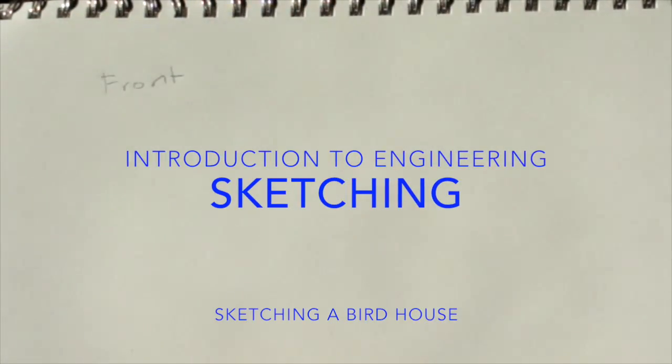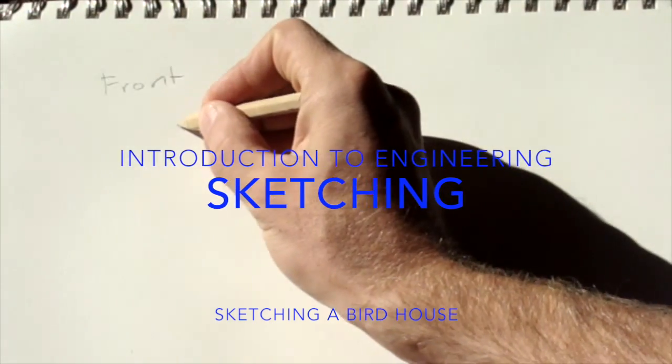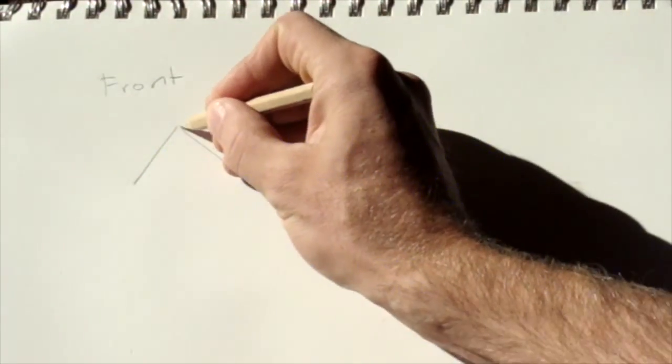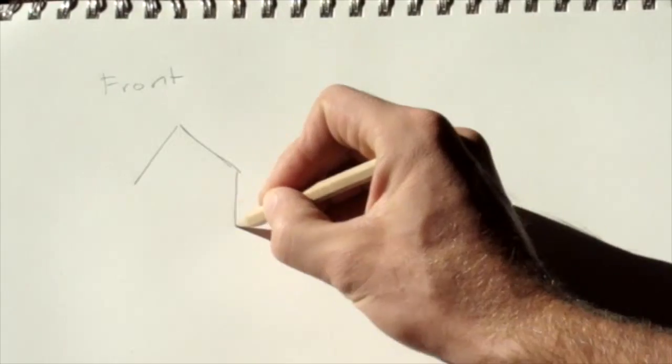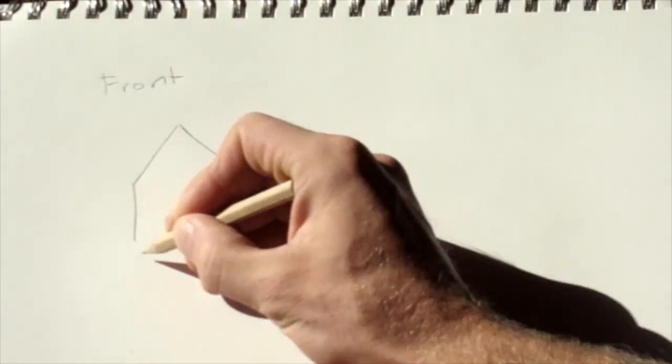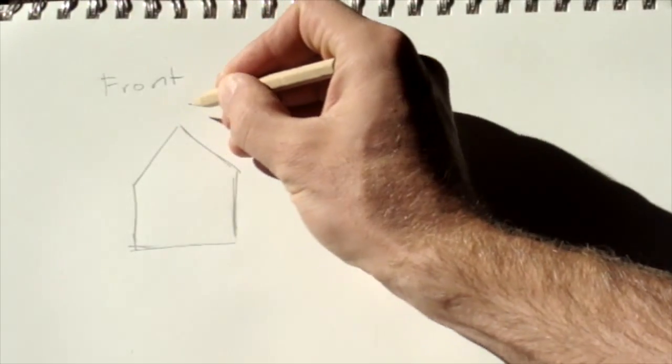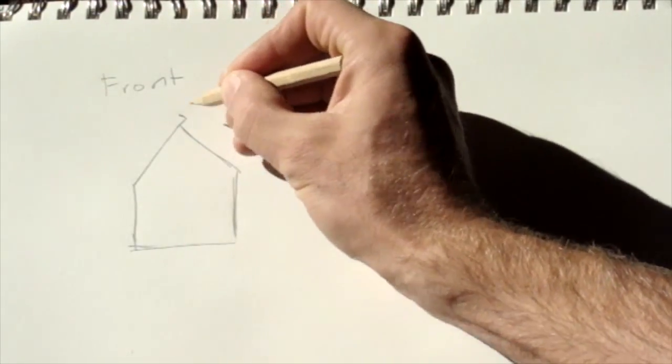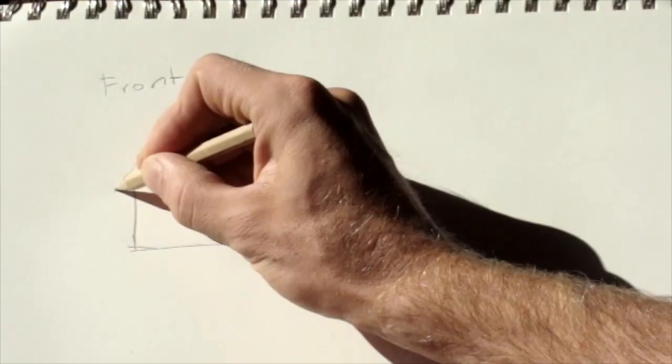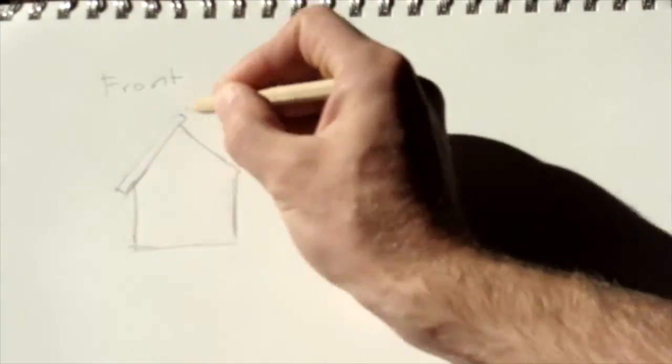Introduction to sketching in engineering. There are a couple different options when you want to sketch. You can do just side views - you could just draw the front, or you could draw the left or right side if you don't feel like you can handle drawing in three dimensions.